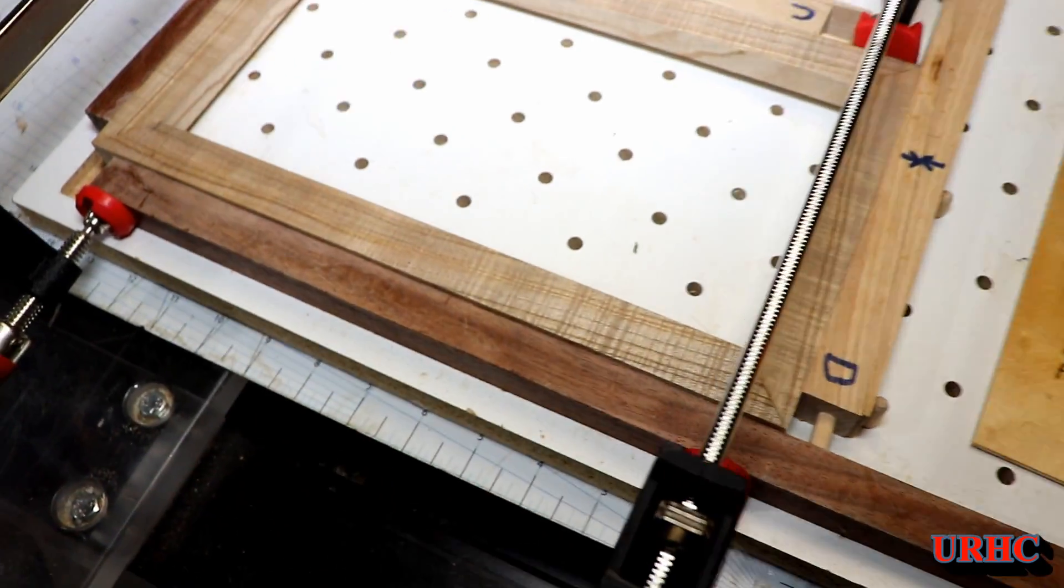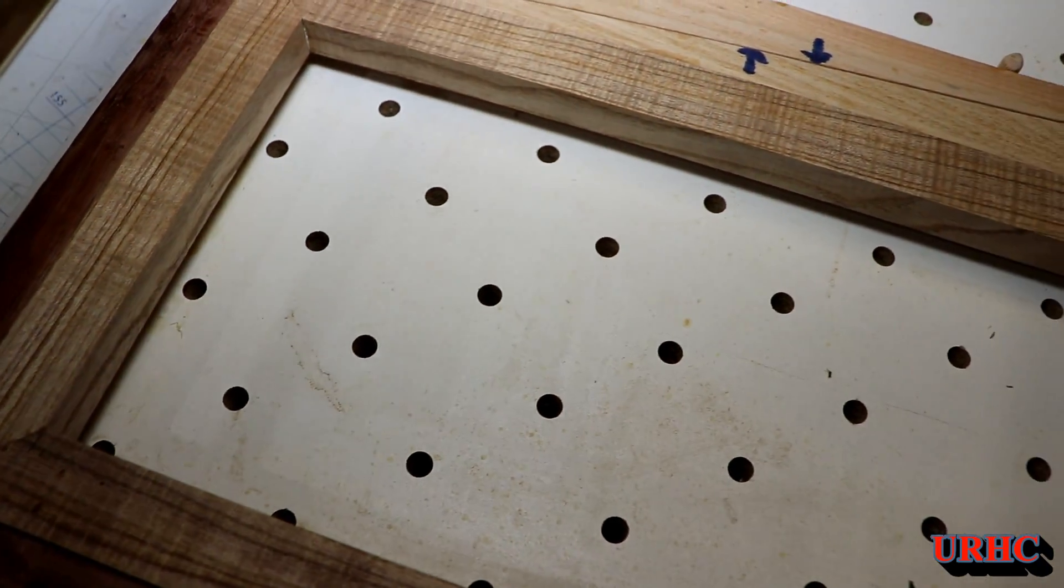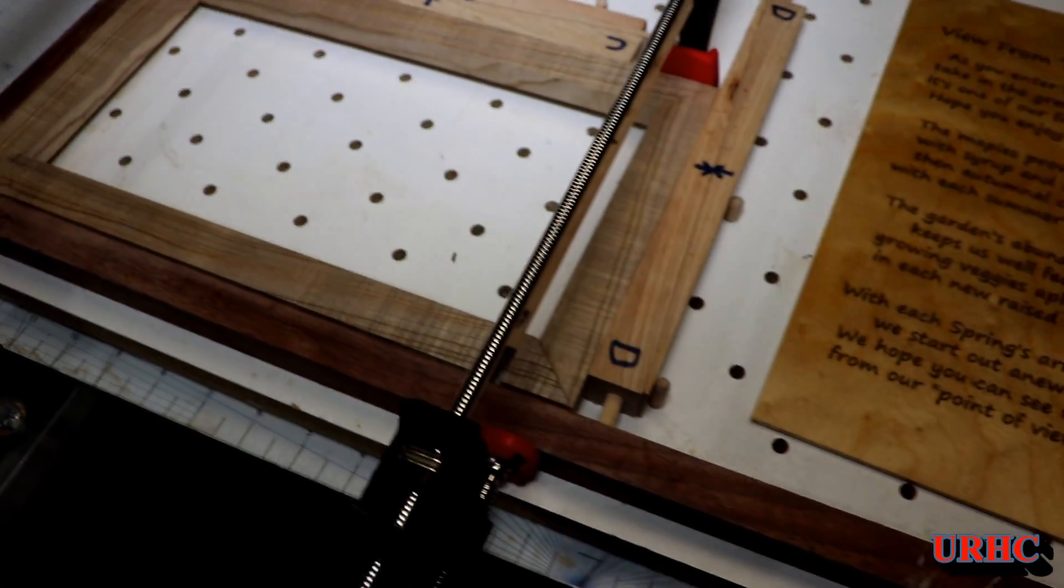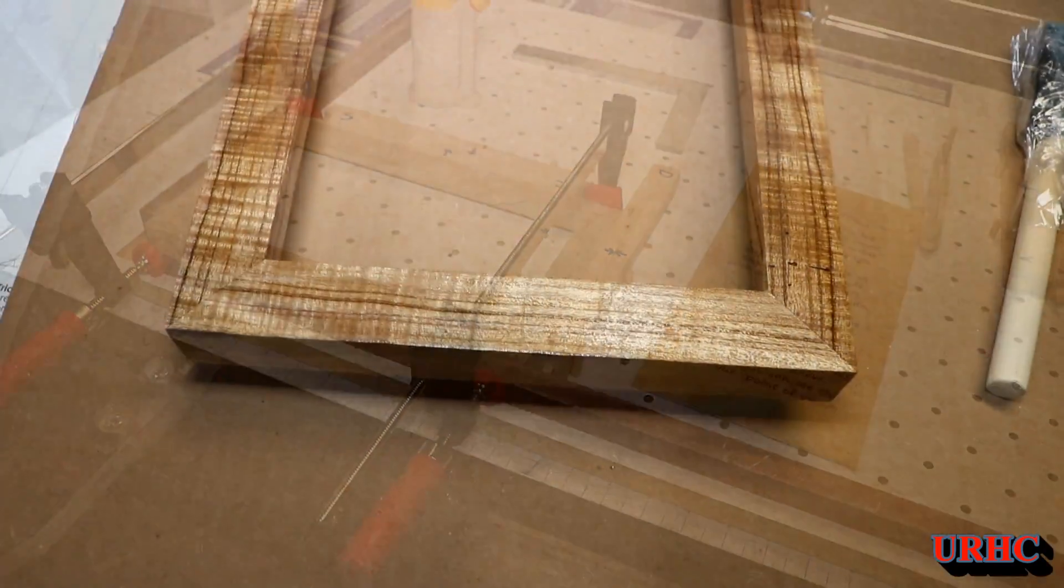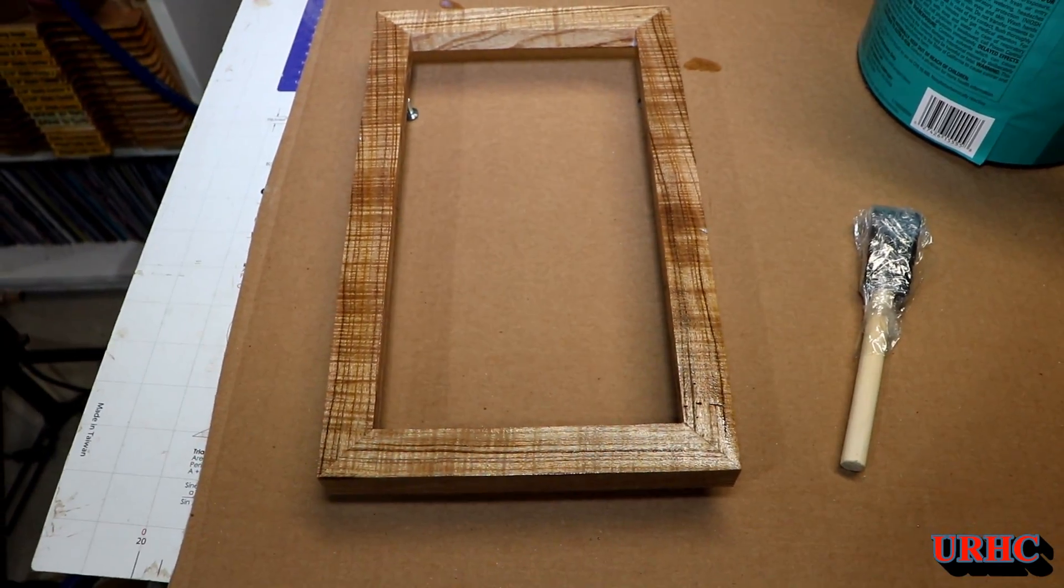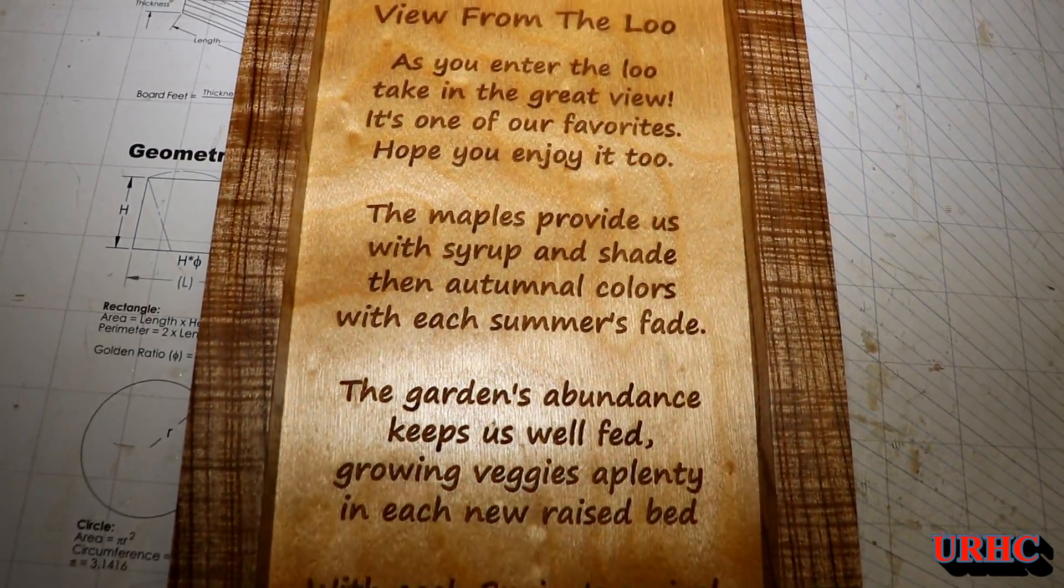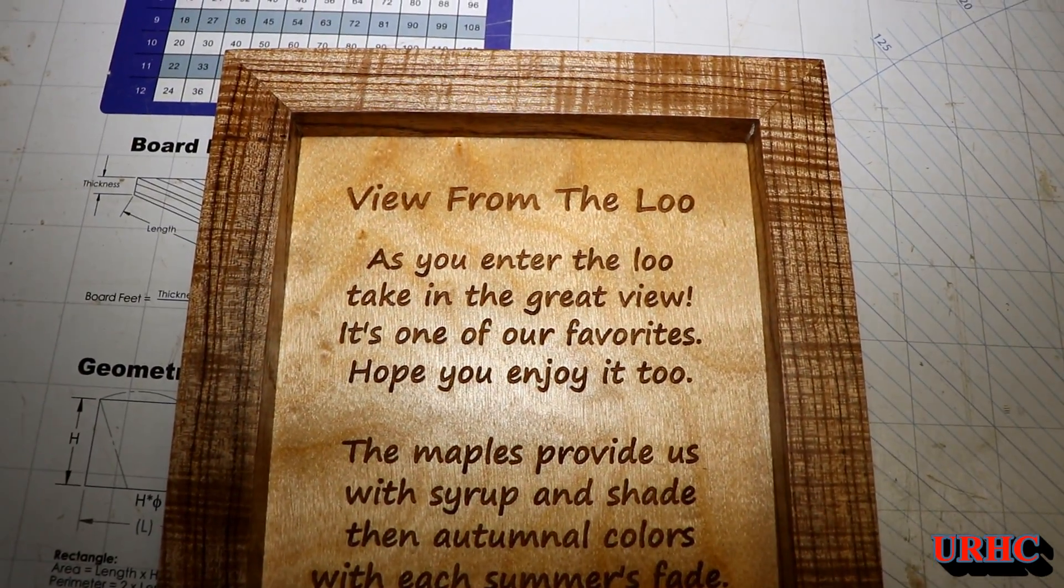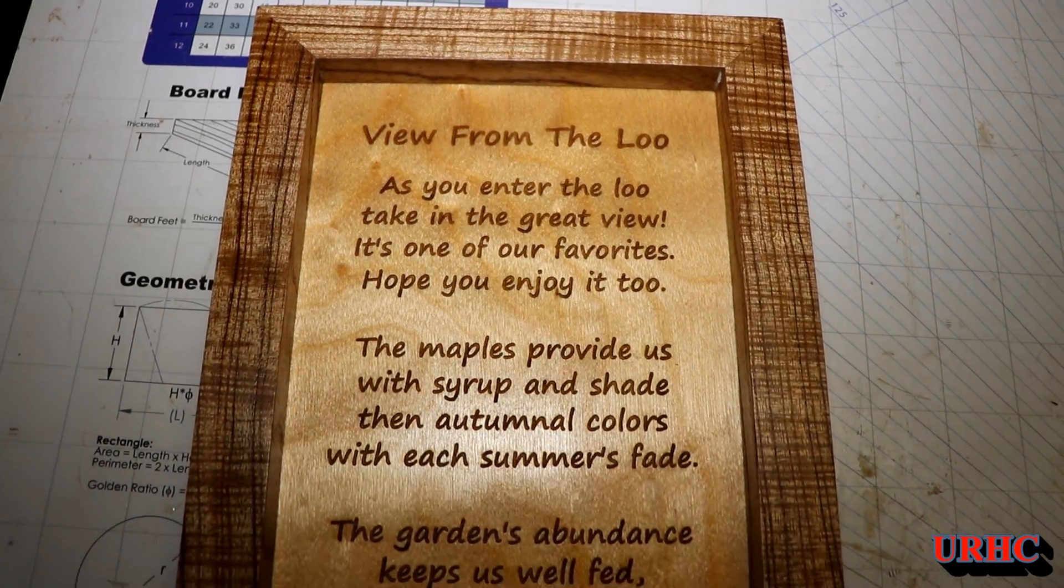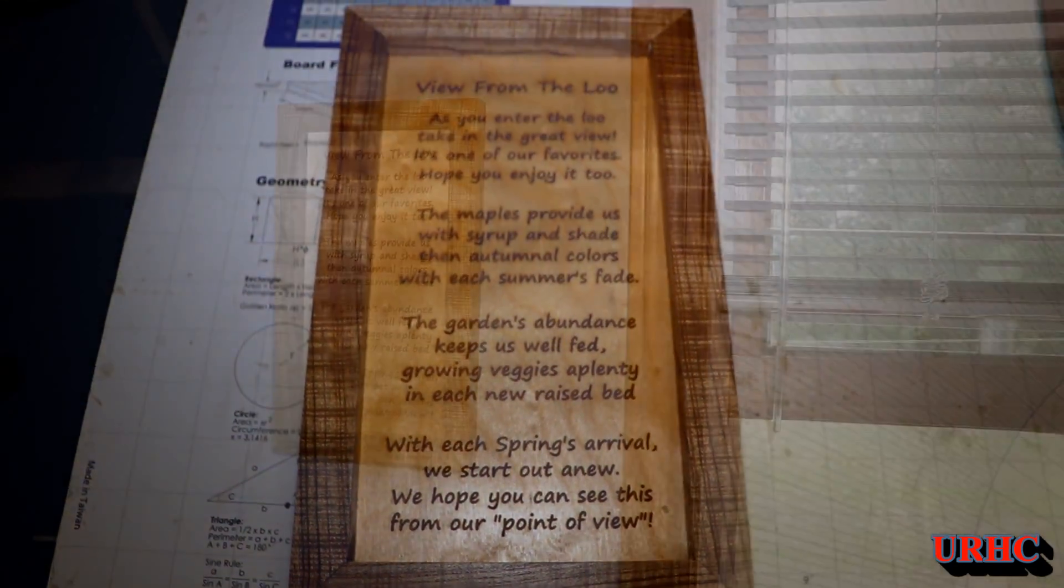I'm over here gluing the frame together now. You see I've got it all clamped up and getting ready to put that together. A couple coats of polyurethane and that's catabla, a real highly figured catabla the way I cut it. I got the sign in there now and ready to go upstairs and hang it up. This was just a fun little sign I had my wife come up with, a little poem.